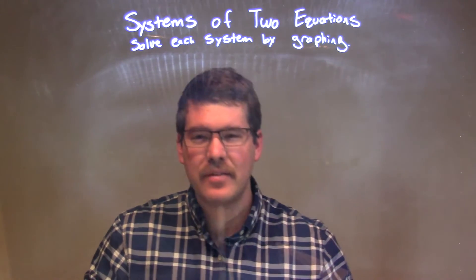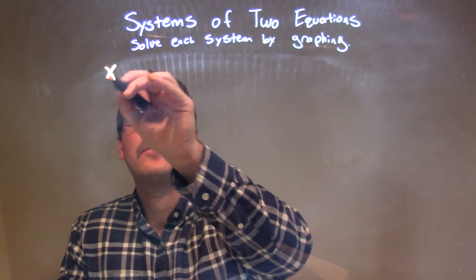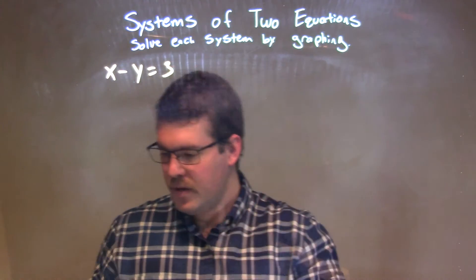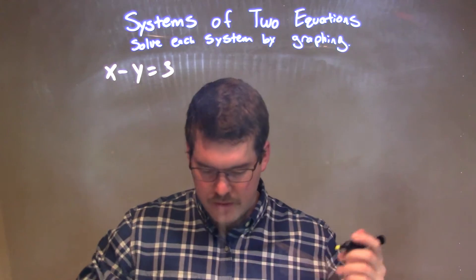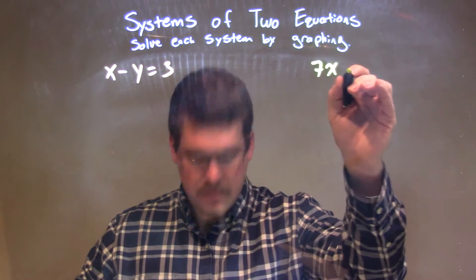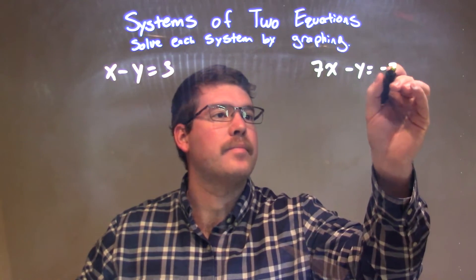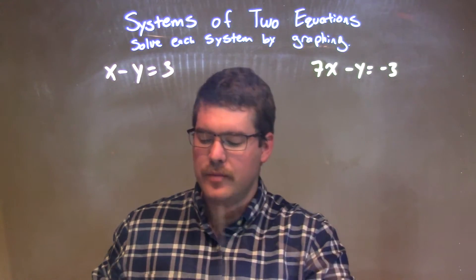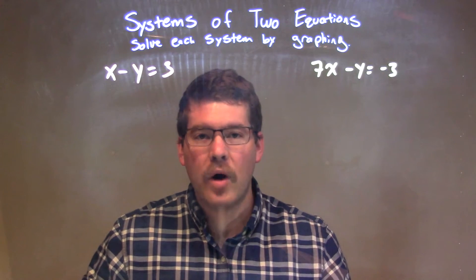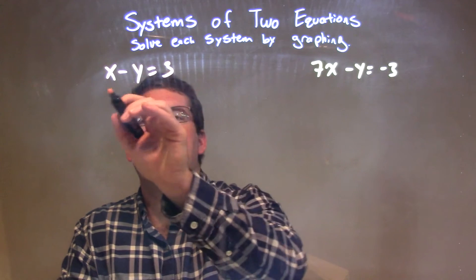So I was given these two equations. The first one is x minus y equals 3, and the second equation is 7x minus y equals negative 3. What we want to do is get both of these in y equals mx plus b form, so isolate y — let's quickly do that.